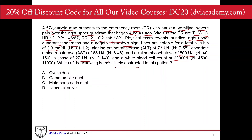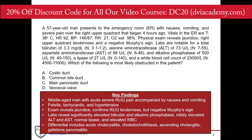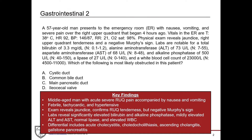The question asks: which of the following is most likely obstructed in this patient? Answer choices are cystic duct, common bile duct, main pancreatic duct, and ileocecal valve. This tests not only biliary pathology knowledge but also anatomy — knowing where this obstruction sits in the biliary tree. Key findings summarized: middle-aged man, acute severe RUQ pain with nausea and vomiting, febrile, tachycardic, hypertensive, jaundice, negative Murphy sign, elevated bilirubin and ALP, mildly elevated ALT and AST, normal lipase, elevated WBC. Differential includes acute cholecystitis, choledocholithiasis, ascending cholangitis, and gallstone pancreatitis.